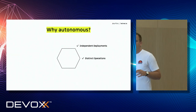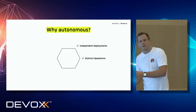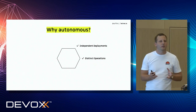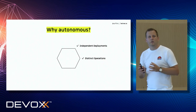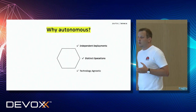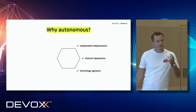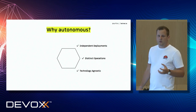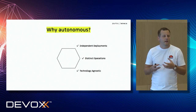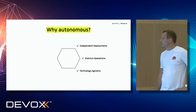The second reason is that we want distinct operations — our services start on their own, live on their own, die on their own, restart on their own, and have persistence on their own. That brings a lot of resilience. The third reason is that we can be technology agnostic. We don't have to be, but usually it's quite good that we can use the technologies and tools which fit best for our problem.